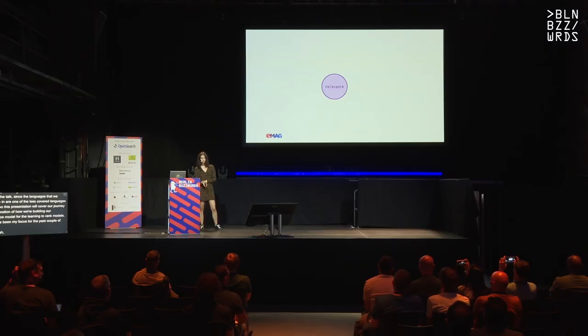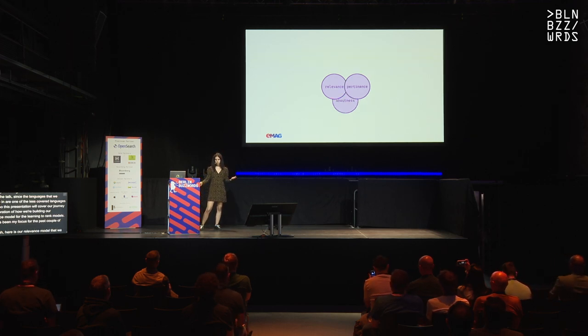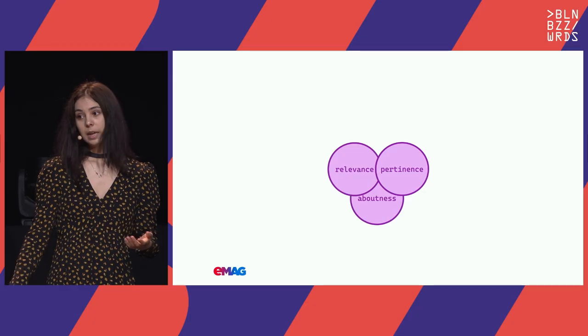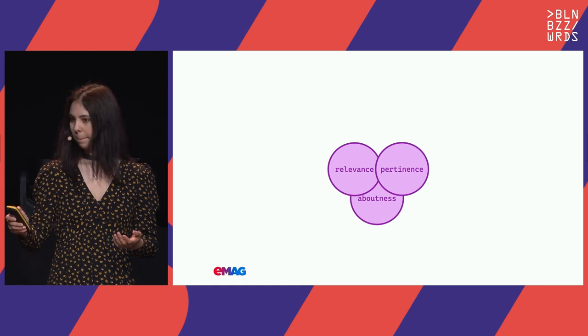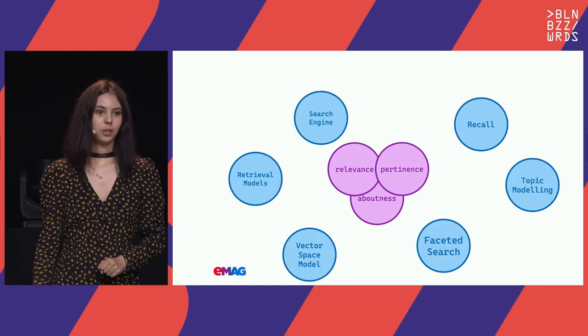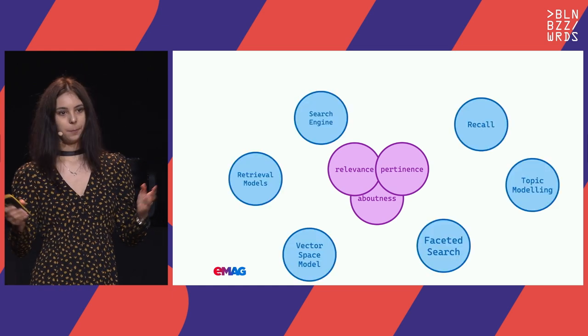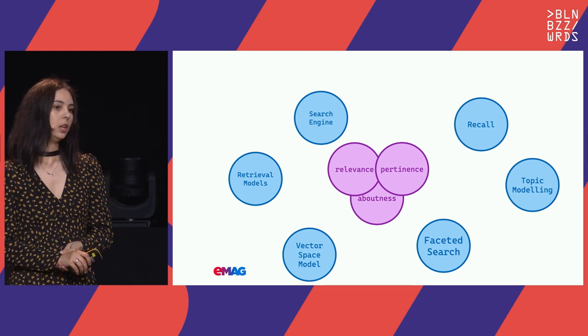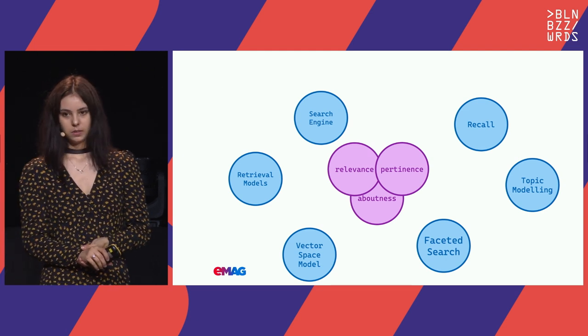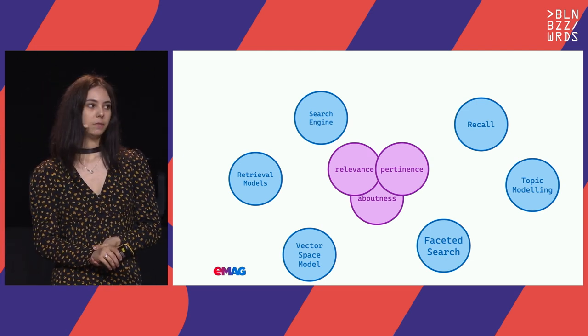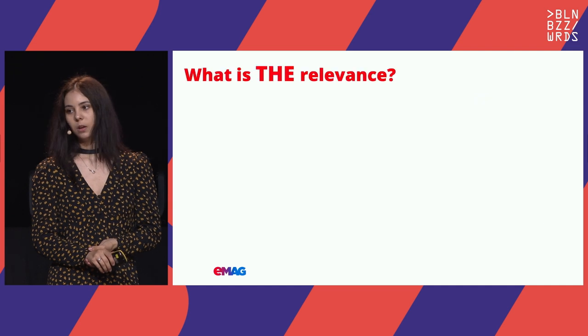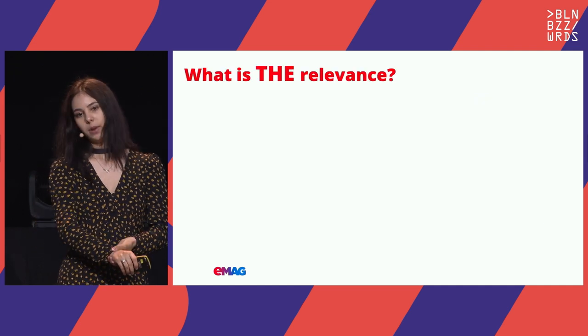Here is our relevance model that we want our learning-to-rank models to learn. Sometimes it is also referred to as pertinence or aboutness, and it's central to the information retrieval area.